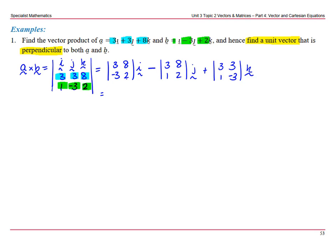Three times two is six, take negative 24 becomes plus 24. Three twos are six take eight, negative nine minus three. So 30i, six take eight is negative two and minus minus two is plus two.